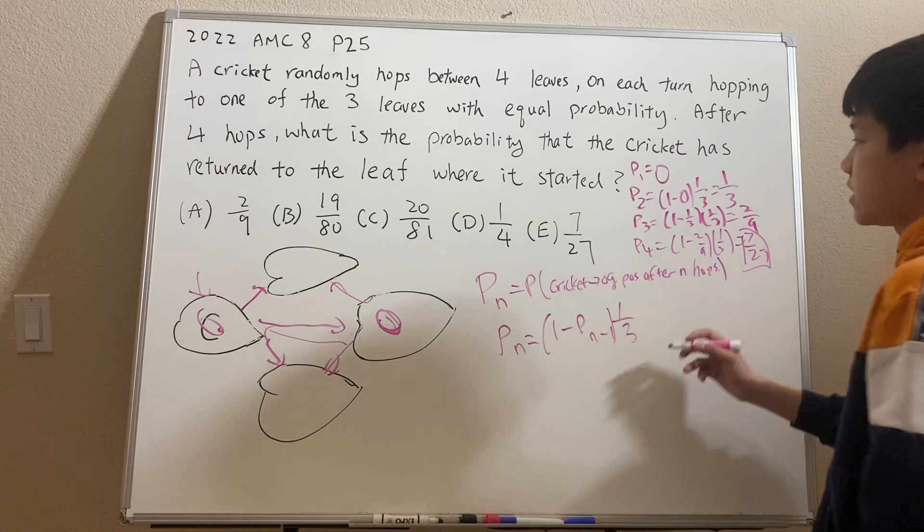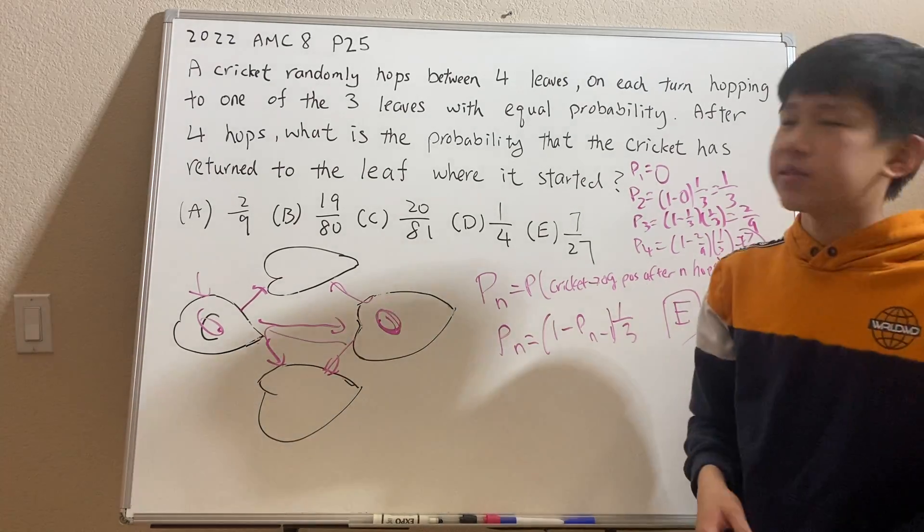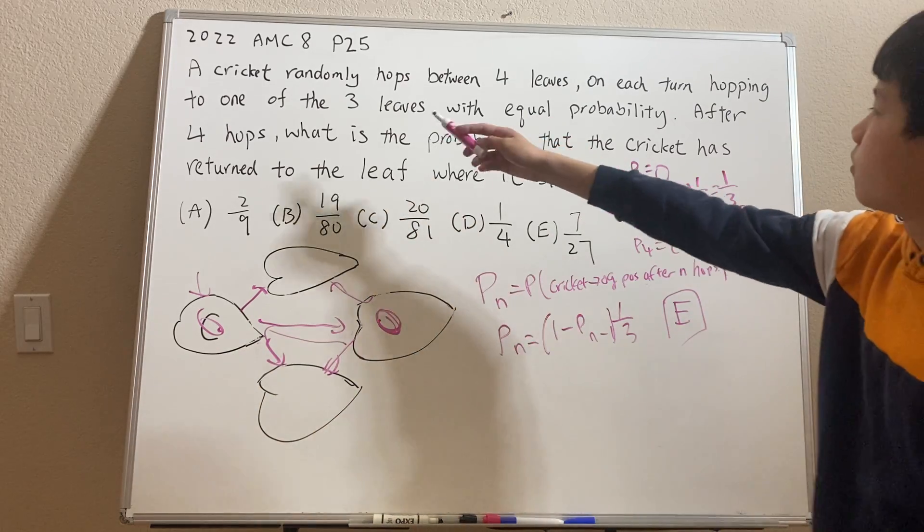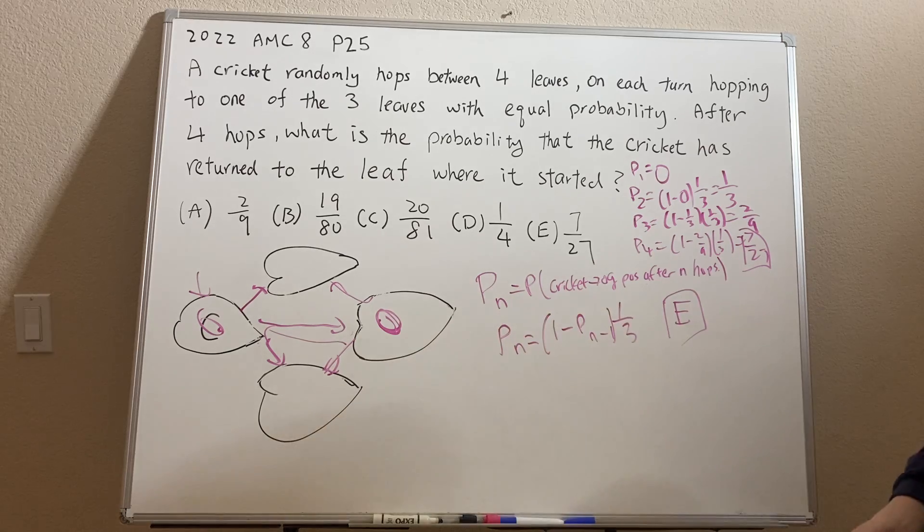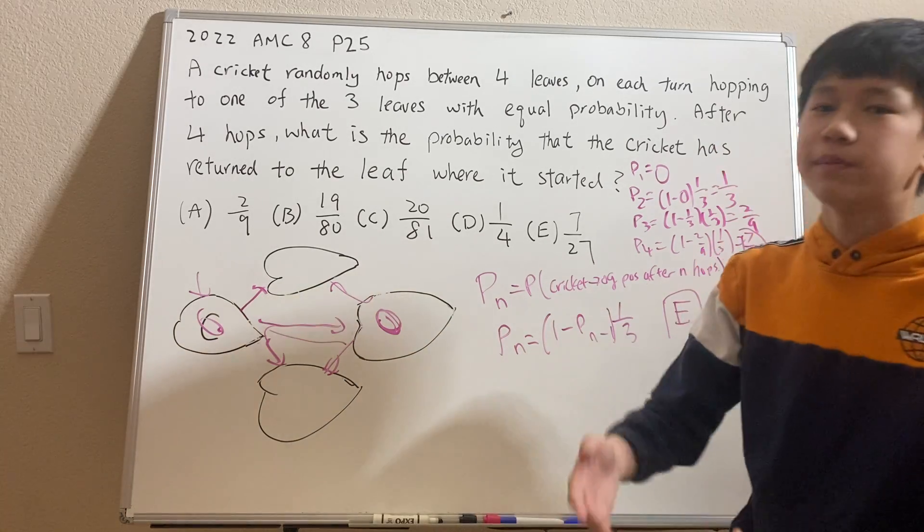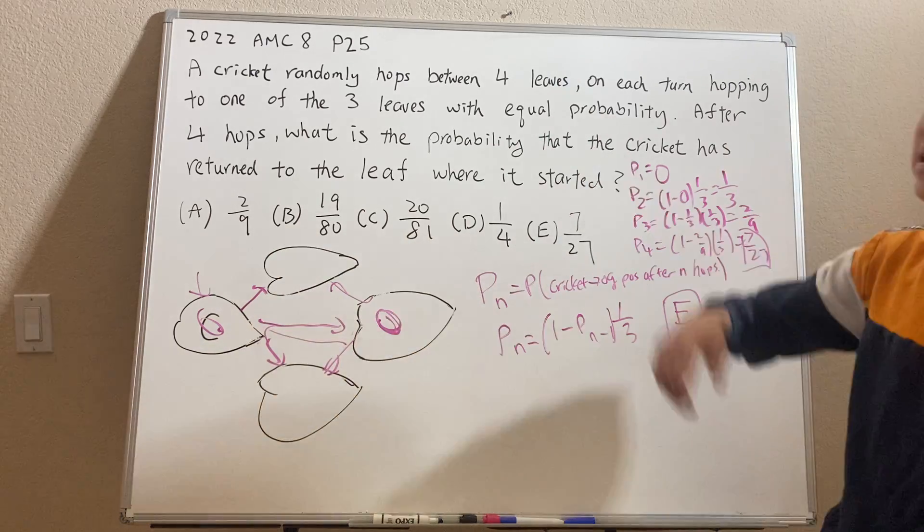And that is answer choice E. So note that this problem could also have been done using 5 hops, 6 hops, 7 hops, because it's just a simple calculation. Rather, casework would be much more lengthier. So recursion is always the best way to go on these types of problems.